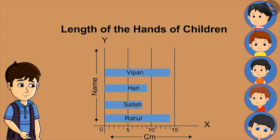In this chart, all your strips are placed with your name and a scale is drawn towards the bottom. By closely looking at this, can anyone tell me who has the longest hands? Rahul and Vipan. How long? 14 cm. Absolutely right.